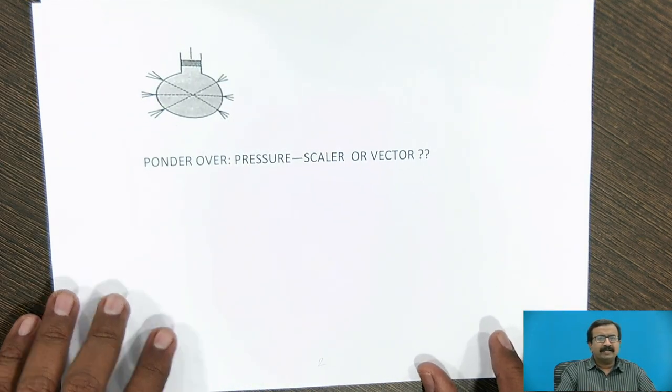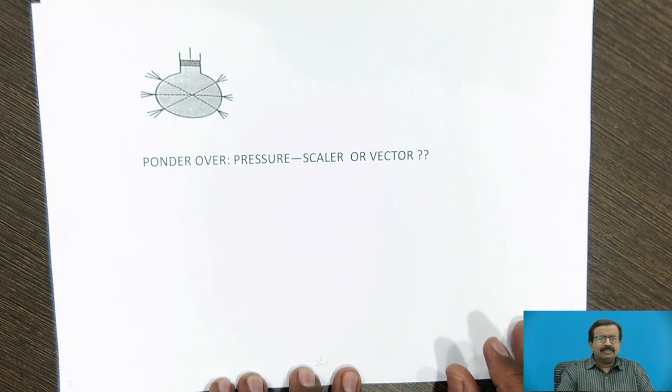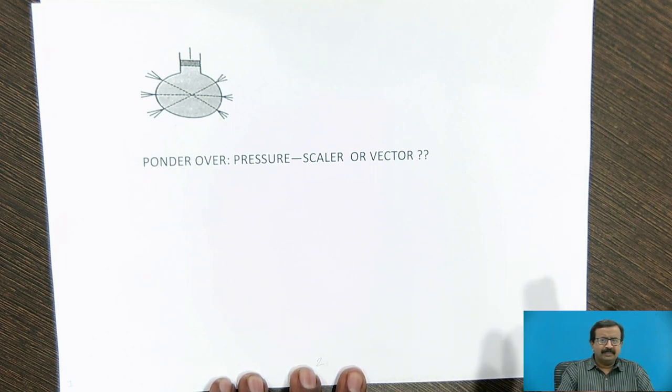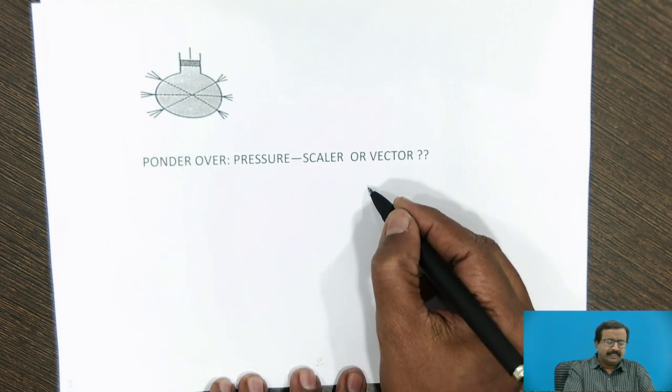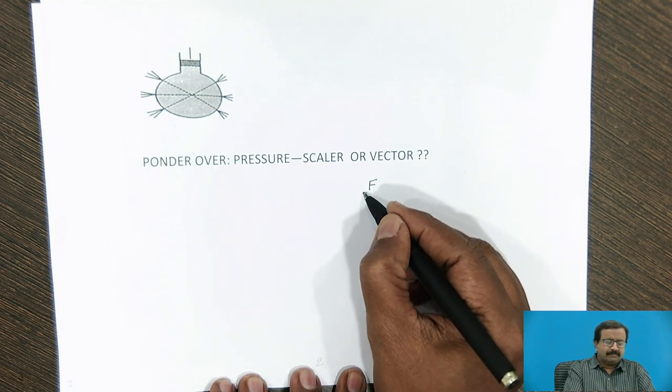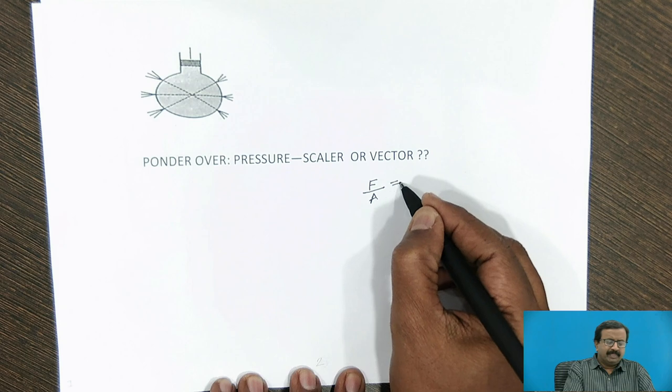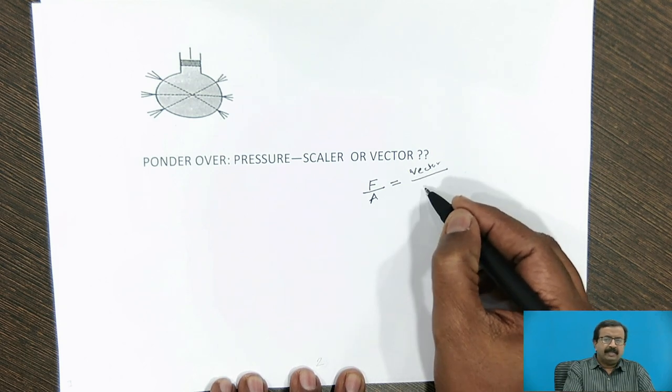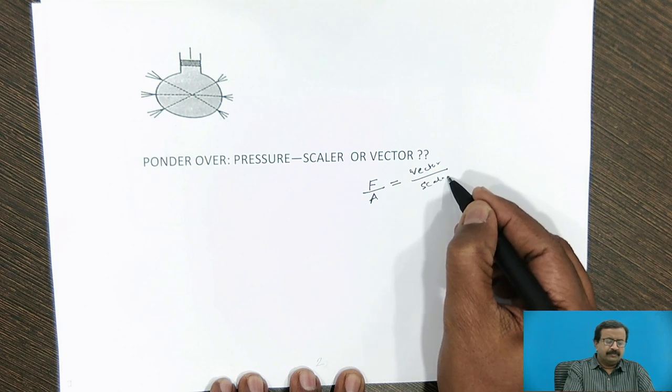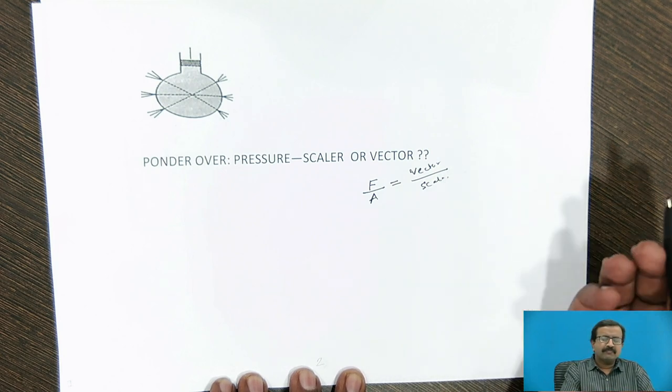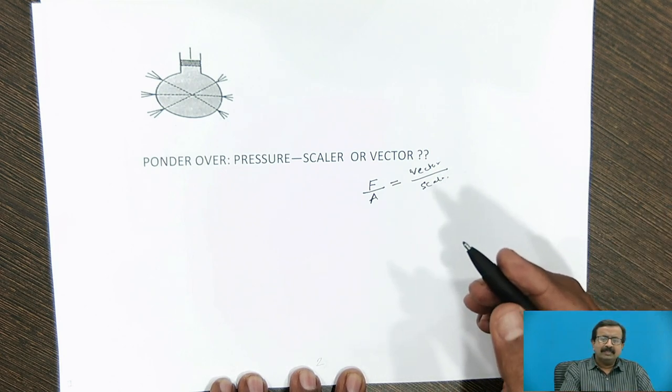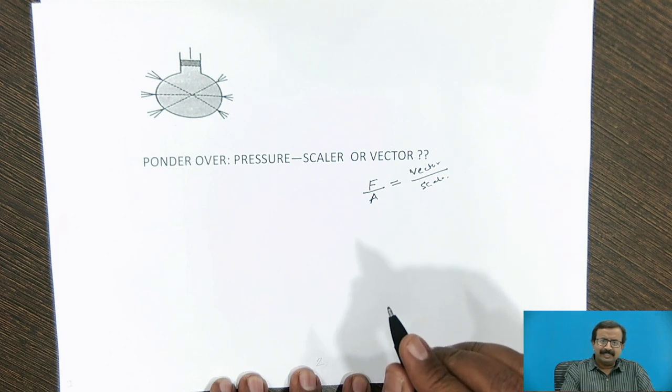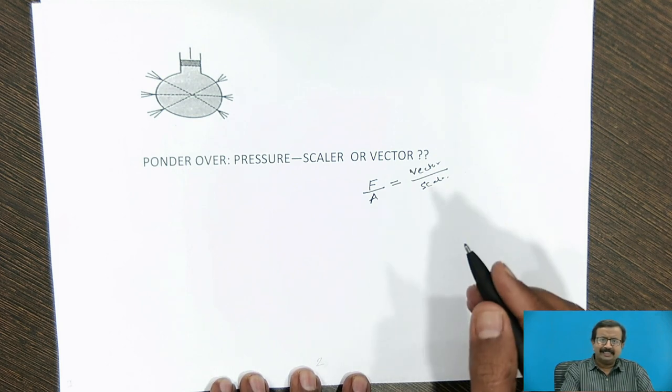Now the next question that I want to ask you about this is, whether pressure is a scalar or vector? Many students have the confusion, and they say that pressure is a vector, because pressure is defined as force upon area, and many people say that force is a vector quantity, and area is a scalar quantity. So vector upon scalar becomes vector. Now about this, we'll see in detail in the next session.